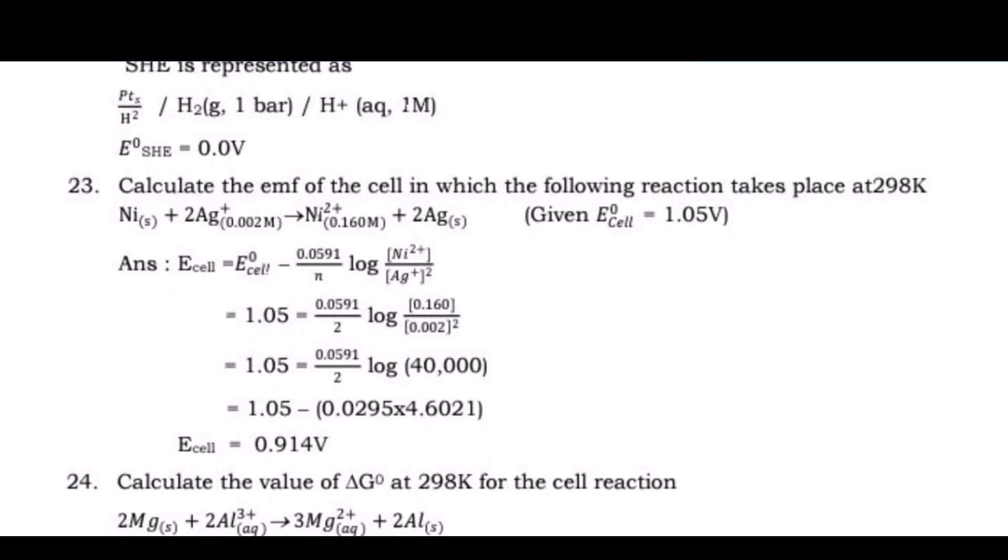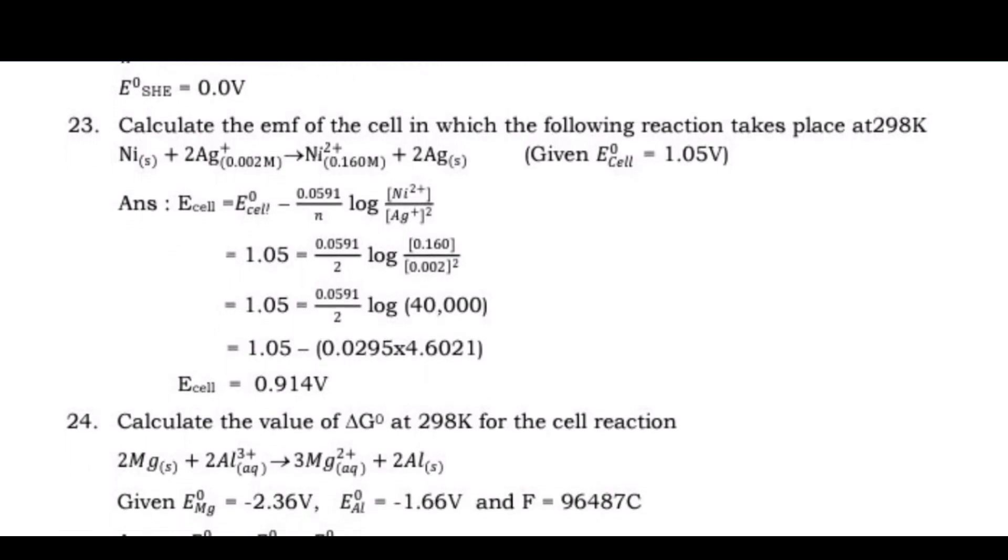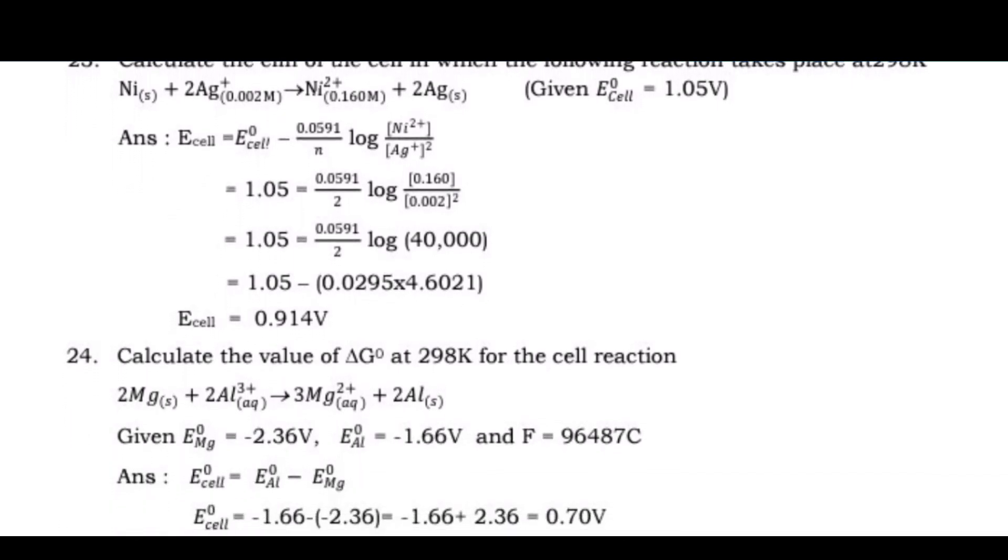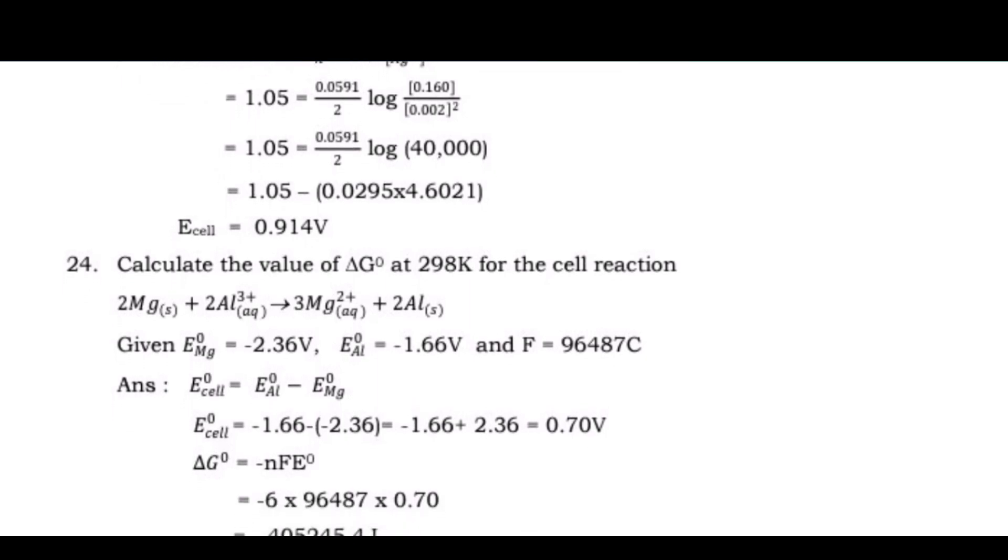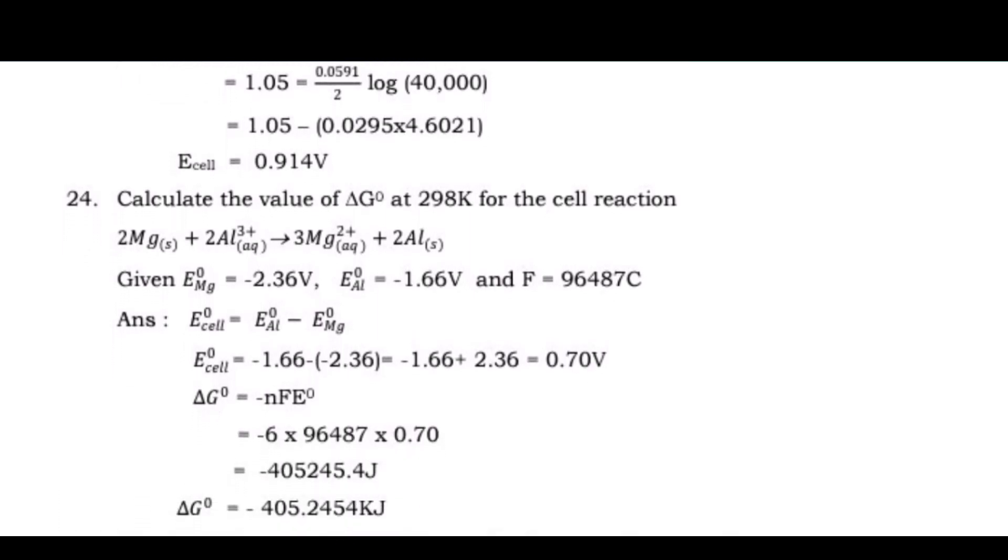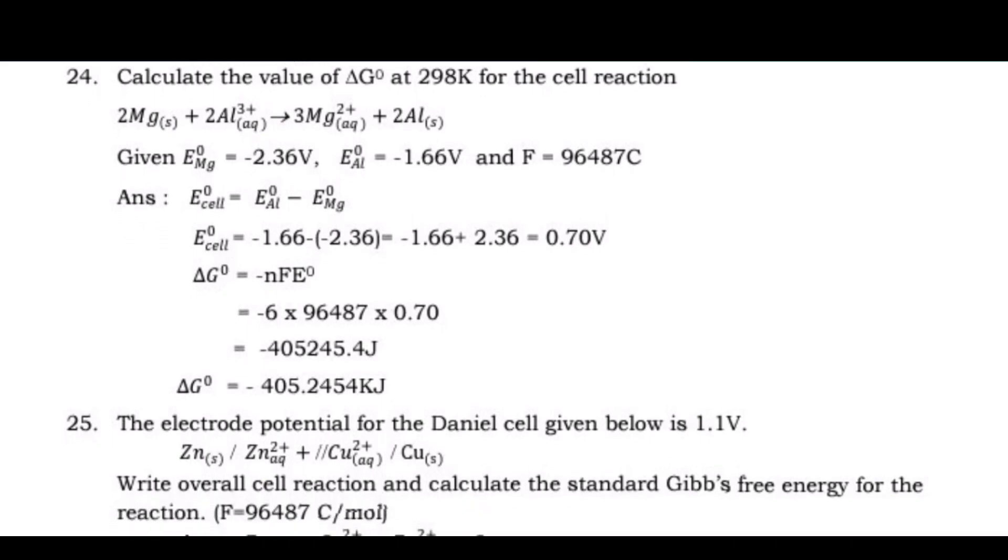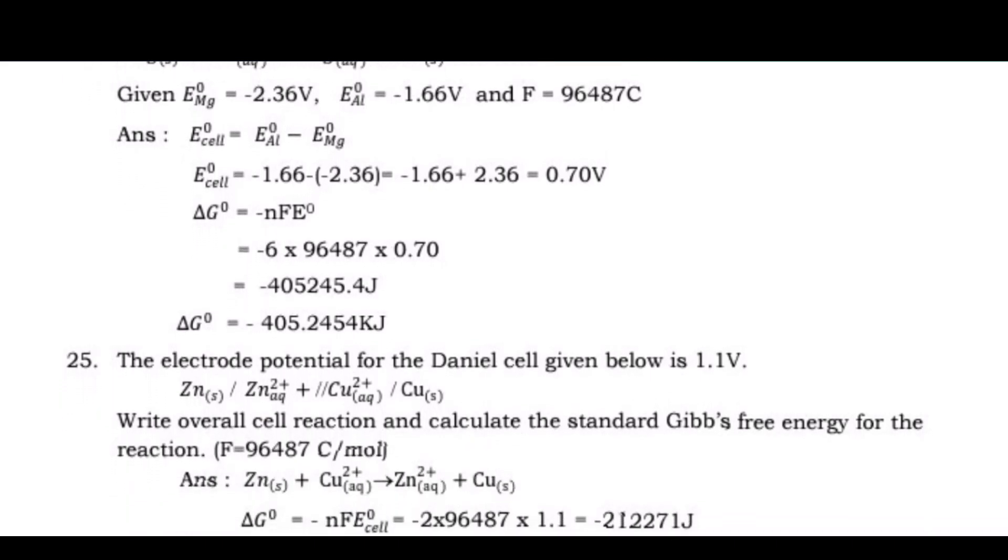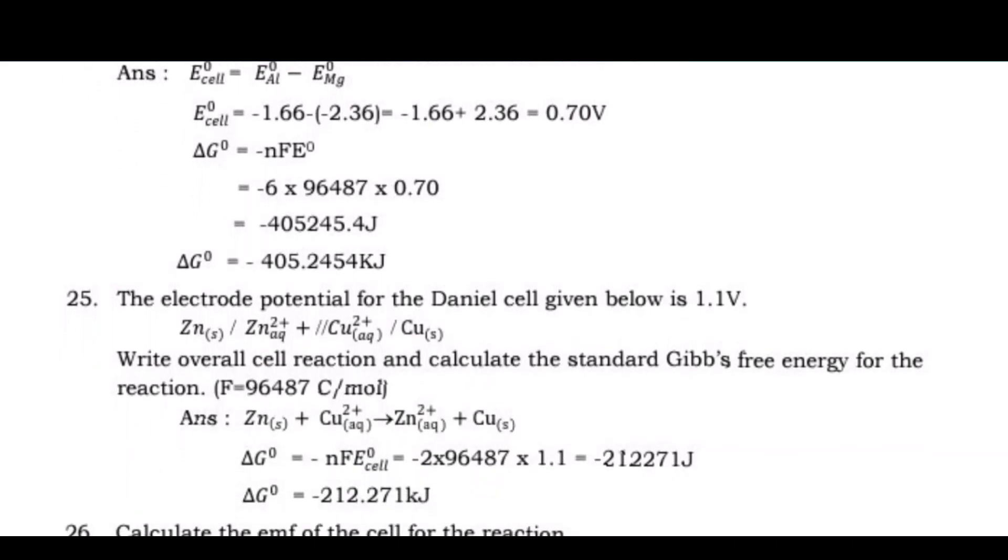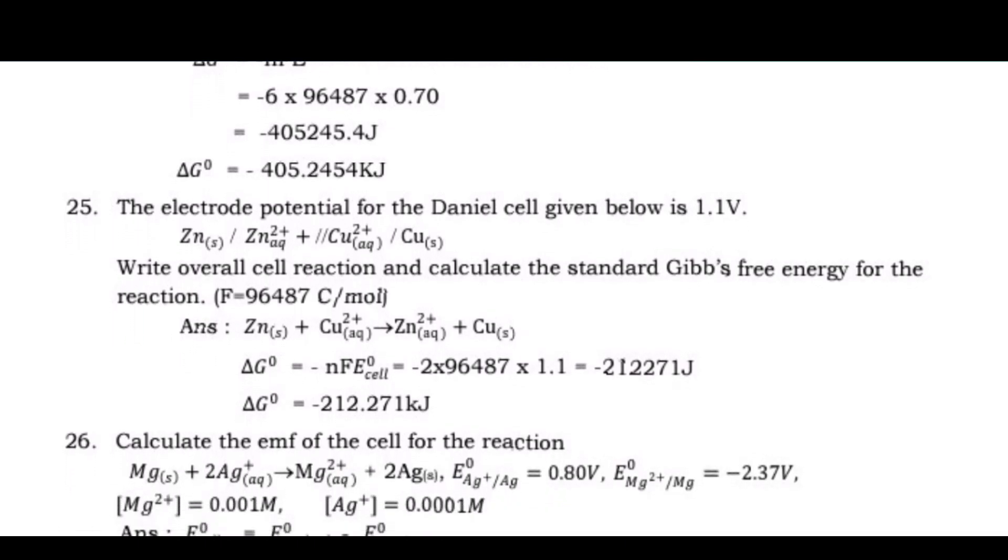Question 24: Calculate the value of ΔG at 298K for the cell reaction. Question 25: The electrode potential for the Daniel cell given below is 1.1 volts.